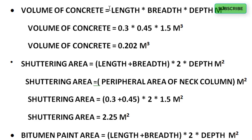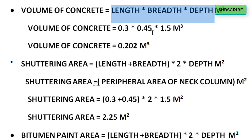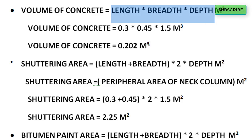The volume of concrete formula is length into breadth into depth, in cubic meters. Here we have length 0.3, breadth 0.45, and depth 1.5. So the volume of concrete is 0.202 cubic meters.